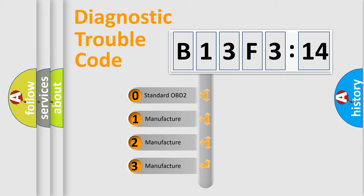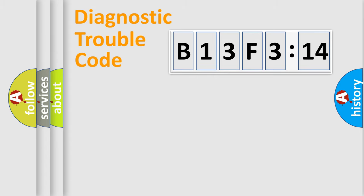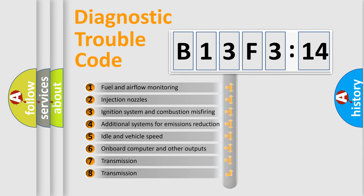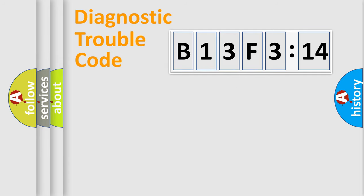If the second character is expressed as zero, it is a standardized error. In the case of numbers 1, 2, or 3, it is a manufacturer-specific error. The third character specifies a subset of errors. The distribution shown is valid only for standardized DTC codes. Only the last two characters define the specific fault of the group.